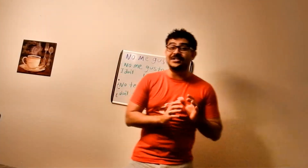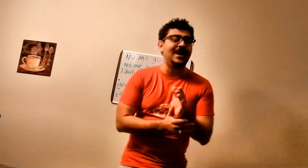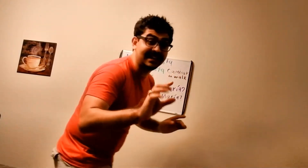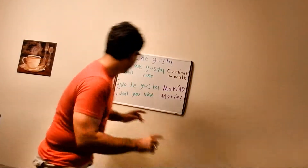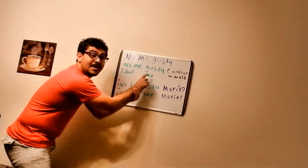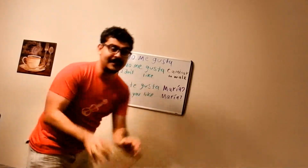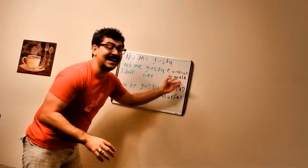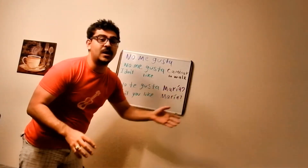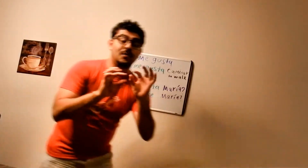Okay, congratulations. Now you know how to say what you like, and you can automatically learn how to say what you don't like, simply by adding 'no.' No me gusta — I don't like. Caminar — to walk. No me gusta caminar.